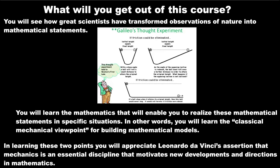So what are you going to get out of this course? Well, hopefully you have an idea up to this point. You're going to see how great scientists have transformed observations of nature into mathematical statements. And the graphic just below is Galileo's famous thought experiment on inclined planes, which is how he arrived at the law of inertia, what we call Newton's first law. And that is very topical in all sorts of applications even today. So you're going to learn how to turn observations into mathematics. And in the process, you're going to appreciate Leonardo's assertion that mechanics is an essential discipline that motivates many new developments and directions in mathematics.